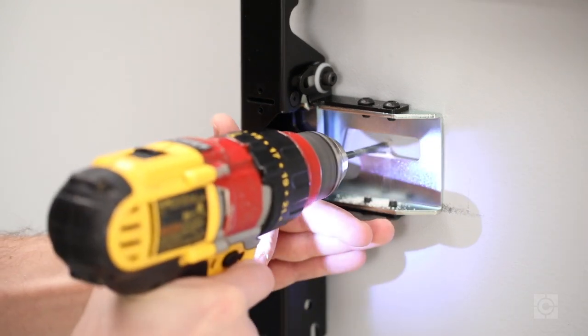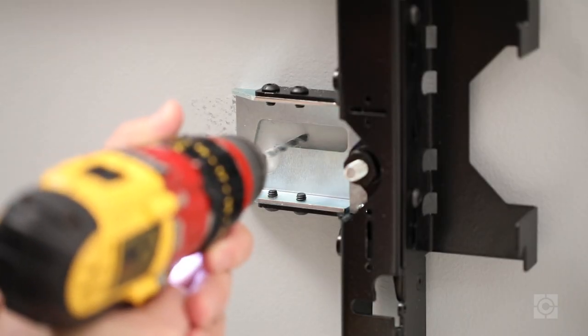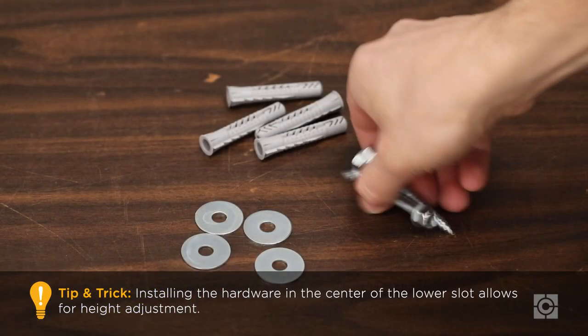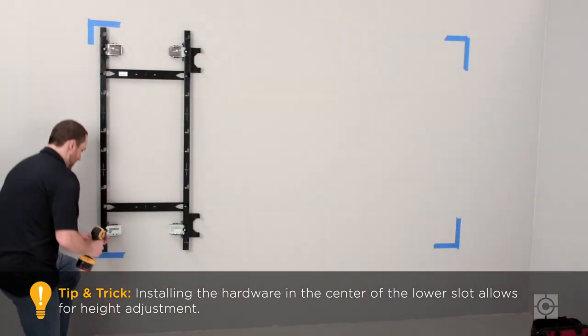Next, drill the pilot holes for the lower mounting points in the center of the mounting slots. Install the lower leg bolts with fender washers to secure the lower mounting points.